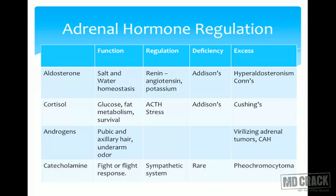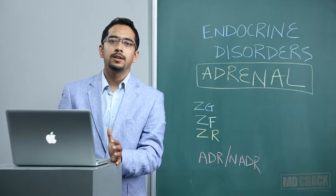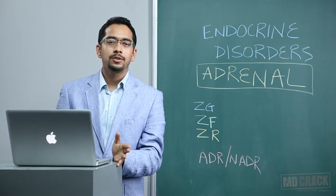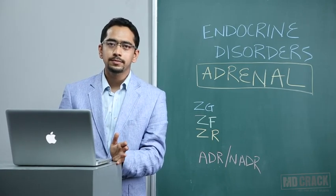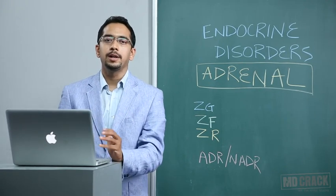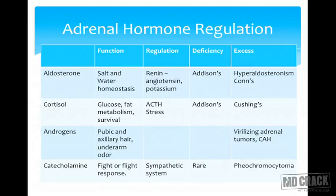Cortisol's function is survival, glucose and fat metabolism, and it also plays a role in immune regulation. It is under direct control of ACTH and comes under pituitary control — unlike aldosterone, which is not under pituitary control. Cortisol is regulated by ACTH and indirectly by stress. Its deficiency gives rise to Addison's, so in Addison's you have deficiency of both aldosterone and cortisol. Excess cortisol production is Cushing's syndrome.